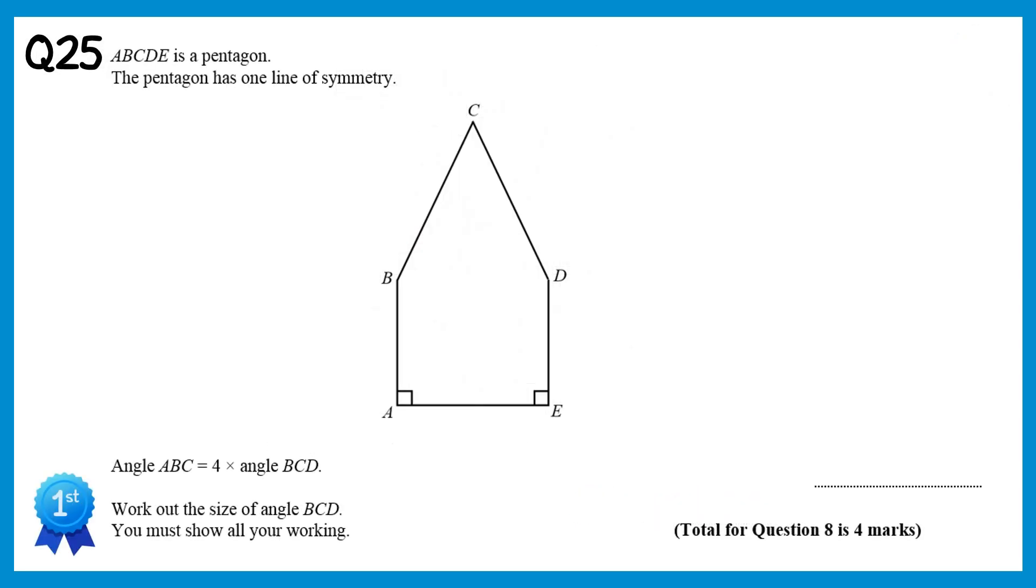For this question we need to know how many degrees there are in a pentagon. To do this we'll use the formula n take away 2 times 180. n is the number of sides, so this has 5 sides, so we do 5 take away 2 times 180. This gives you 540 degrees. This means all of the angles in this shape must add up to 540 degrees. Now we're told in the question that angle ABC is 4 times angle BCD. So if we call angle BCD x, then angle ABC is 4 times that, so 4x.